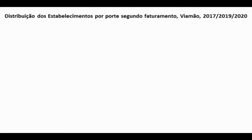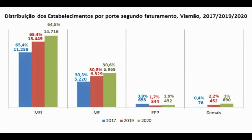Olhando agora para o panorama econômico, podemos observar o número de estabelecimentos pelo porte de acordo com o faturamento, analisando os anos 2017, 2019 e 2020. O maior percentual em Viamão é o de MEIs — microempreendedores individuais —, um número que cresce nesses três anos. Em 2020, considerando dados até maio, 64,5% dos estabelecimentos correspondem a MEIs.